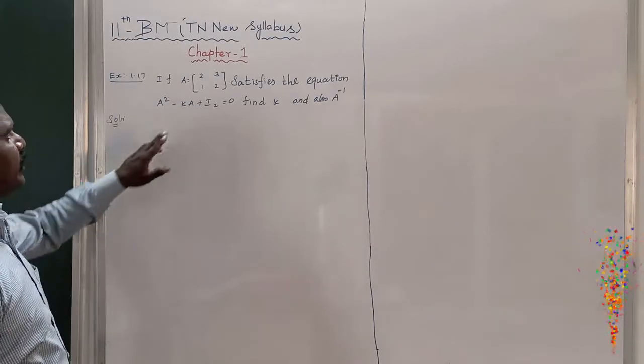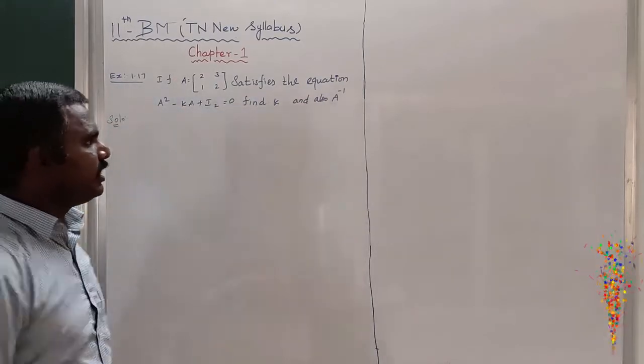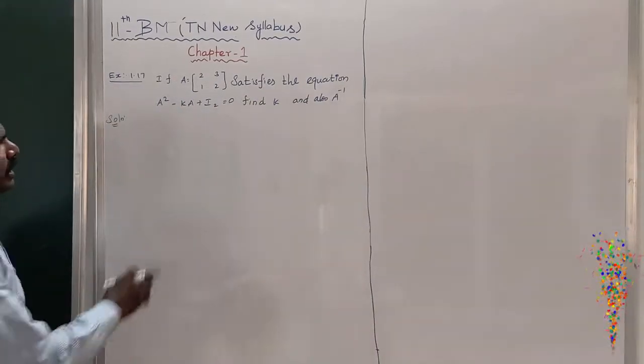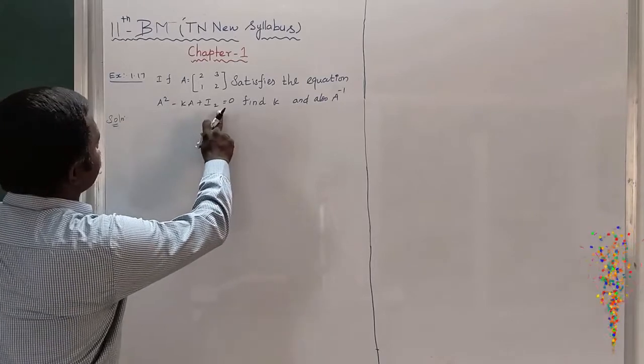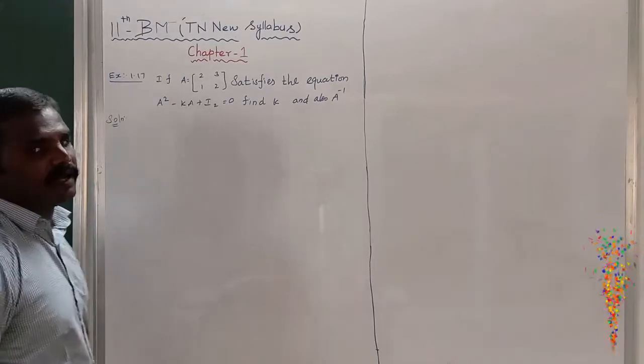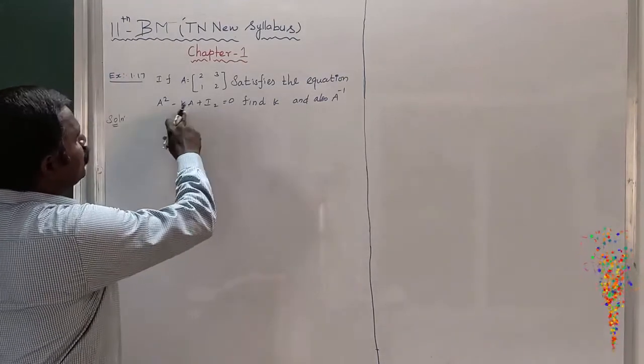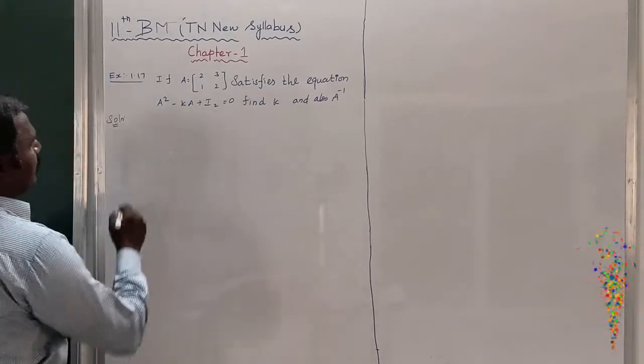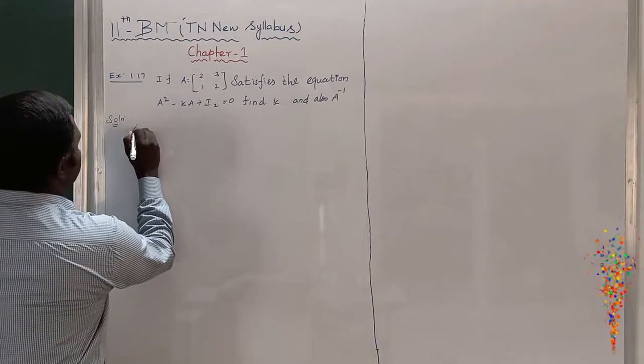First we have to find out K and then next we have to find out A inverse. How can we find out K? This is a condition of the equation where A² - KA + I2, I2 means identity matrix for 2 by 2 minor, equal to 0. First I want to find out A².